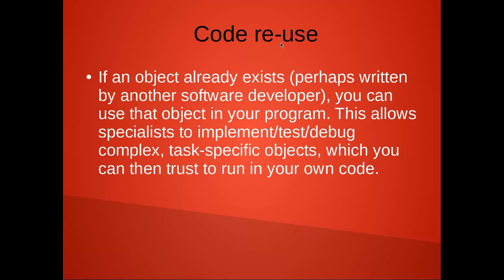You also have code reuse — that means if an object already exists, perhaps written by another software developer, you can use that object in your program. This allows specialists to implement, test, or debug complex specific objects which you can then trust to run in your own code. An example of this is that I have written a secretary class, and after that you download the class and use it inside your software. This is what we call code reuse.